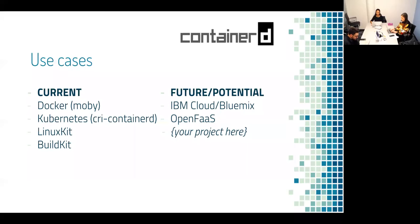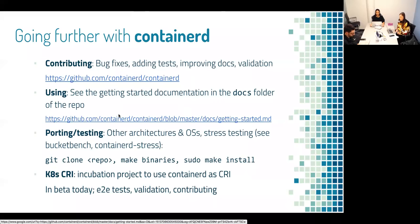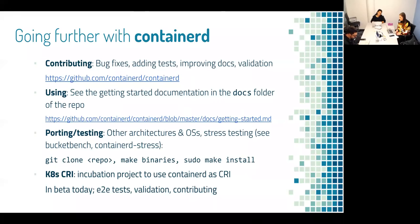Some use cases for ContainerD: it's currently in Docker, Kubernetes with CRI ContainerD, LinuxKit, and BuildKit. It has a lot of potential in IBM Cloud, OpenFaaS, and other projects. To go further with ContainerD, we would love to see bug reports, bug fixes, tests, and improved docs — every contribution is welcome. You can get started with ContainerD by seeing our docs folder which has a pretty great getting started guide. We would appreciate porting and testing across other architectures and operating systems. Try out the stress test tool. Kubernetes CRI ContainerD is also an incubation project that uses ContainerD as the runtime — it's in beta today.